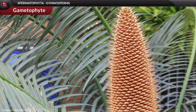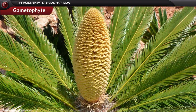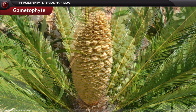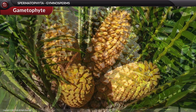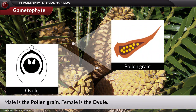Regarding the gametophyte, gymnosperms possess both male and female gametophytes and do not exhibit a free-living nature. The male gametophyte is the pollen grain and the female gametophyte is the ovule, and both are retained within the sporophytic body.